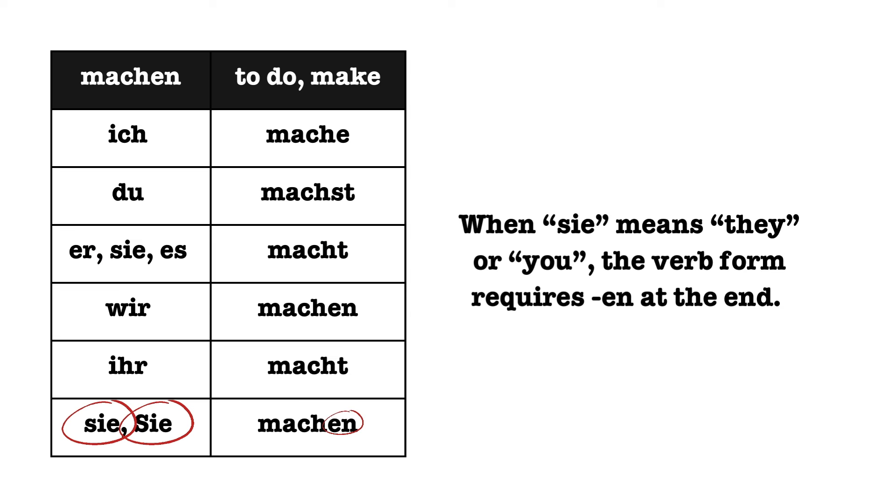Both of those versions of 'sie' require -en at the end of the verb, which tells us that it's either 'they' (lowercase) or 'you' (capitalized). In most circumstances, the only way to tell the difference between 'sie' meaning they and 'Sie' meaning you is context. If you address someone directly, they use 'Sie' in those sentences, probably meaning you. If you are talking about a group of people in the third person — meaning you are not directly speaking to them — you need to use 'they' as your translation.